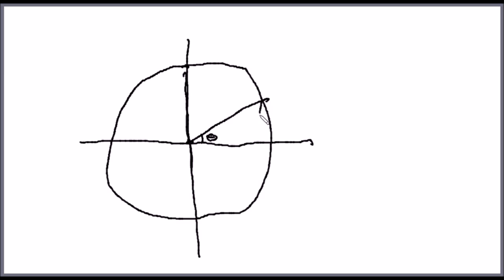So, sine is the ratio of the opposite side over the hypotenuse. And the hypotenuse is 1. So sine theta is, well, sine theta.